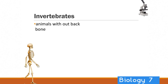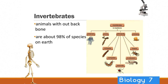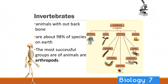Then we move on to invertebrates — these are the ones without a backbone. About 98% of the total number of species on Earth are actually invertebrates, which is a huge portion. Here are some examples: jellyfish are cnidarians, there are also mollusks, sponges, worms, crustaceans, and spiders. Lots and lots of animals do not have a backbone. The most successful group of these are the arthropods.